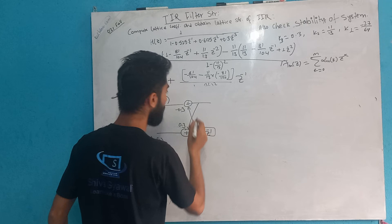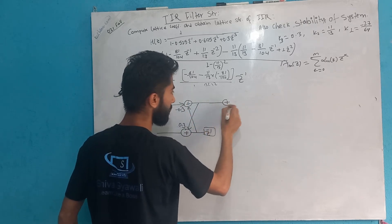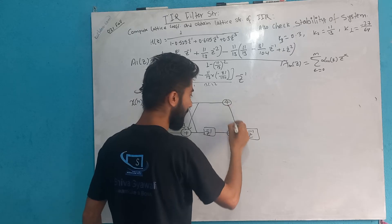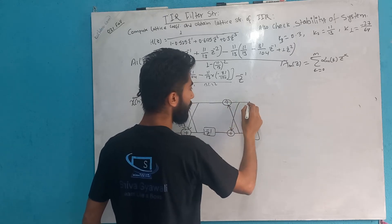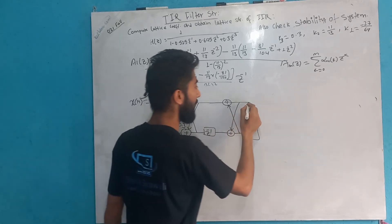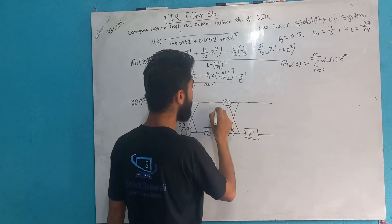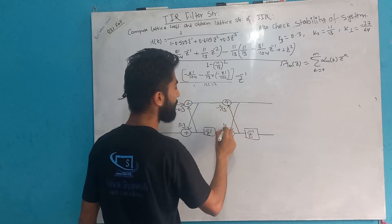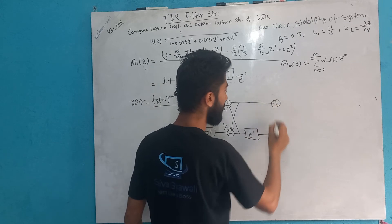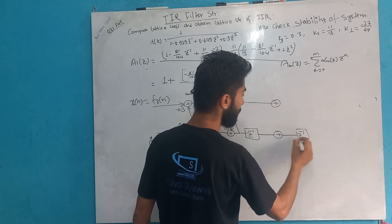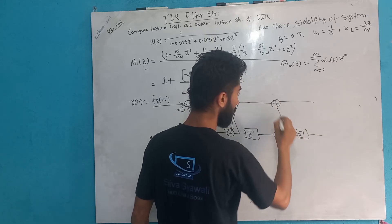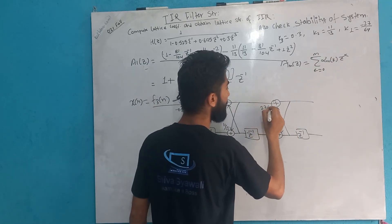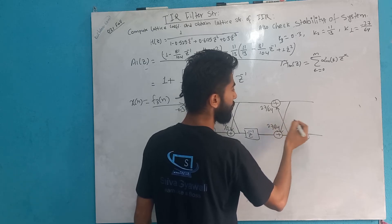So now we know how to draw the lattice structure. We remember the formula and the structure. K1 is minus 27/64, K2 is 11/13, and K3 is 0.3. We place these with Z⁻¹ delay elements accordingly.